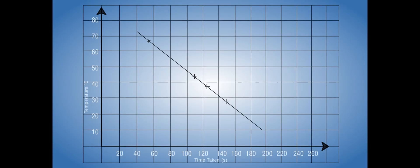Plot a graph between temperature and the time taken for the mark to become invisible. The variation in time is plotted on the x-axis and the variation in temperature is plotted on the y-axis.